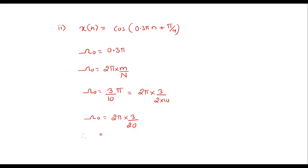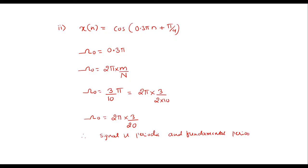The signal is periodic and the fundamental period N is found by comparing with the form 2π·(m/N). Here N = 20, so the fundamental period is N = 20.